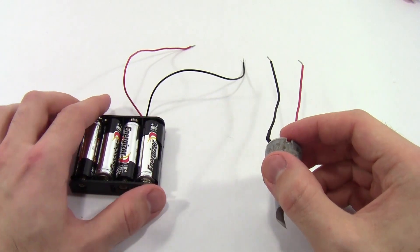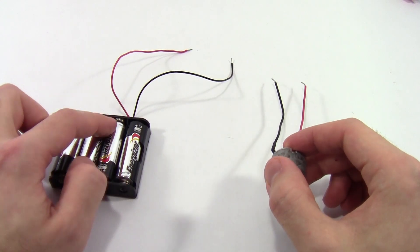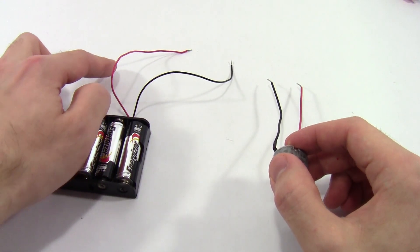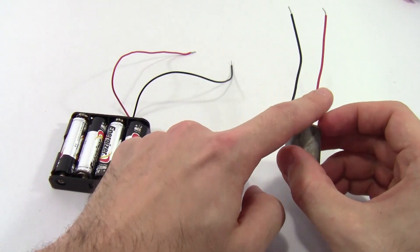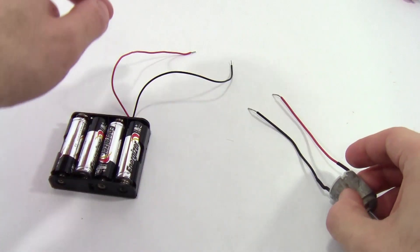In order for this motor to spin, I need a closed circuit or a complete closed path for electricity to flow out one wire from the battery pack, through one wire from the motor, then back out through the other wire and back to the battery pack.